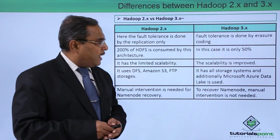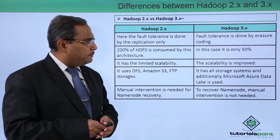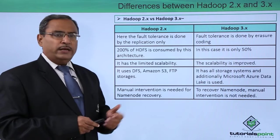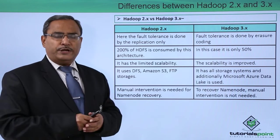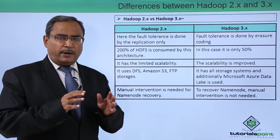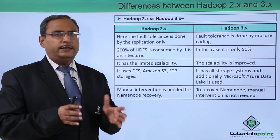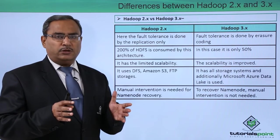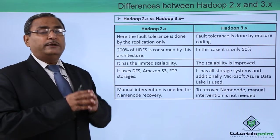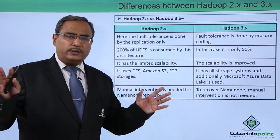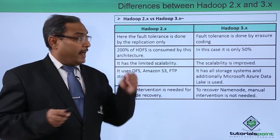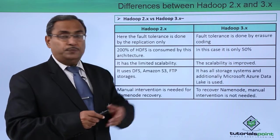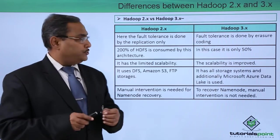In Hadoop 3.x, fault tolerance is done by erasure coding. Erasure coding means the huge volume of data is divided into multiple small parts, they get encoded, expanded with some additional codes, and then distributed onto different storage systems. That is known as erasure coding, and it is a new feature of Hadoop 3.x.